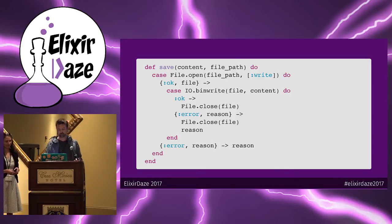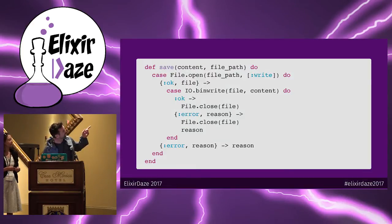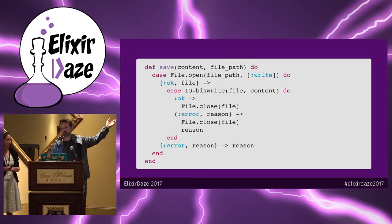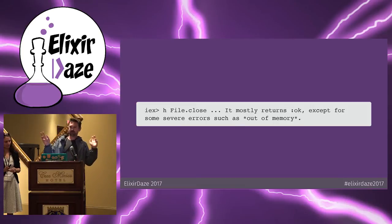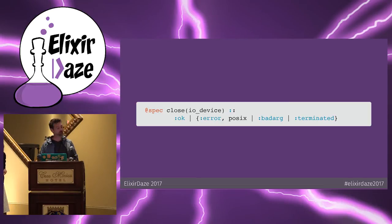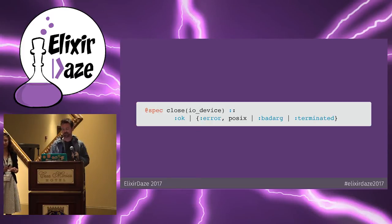What about File.close - might that cause an error as well? If you look in IEx, it mostly returns OK, except for some severe errors such as out of memory. Checking the spec, yes, it definitely could return with an error. To be honest, if we get this kind of error we've probably got bigger problems to deal with, so today we're going to stop there. Let's go back to our little monster here, this save function.